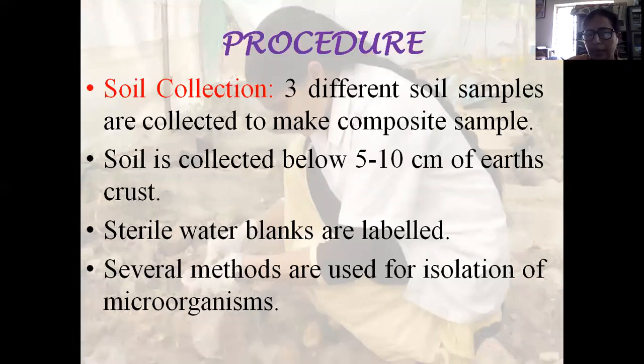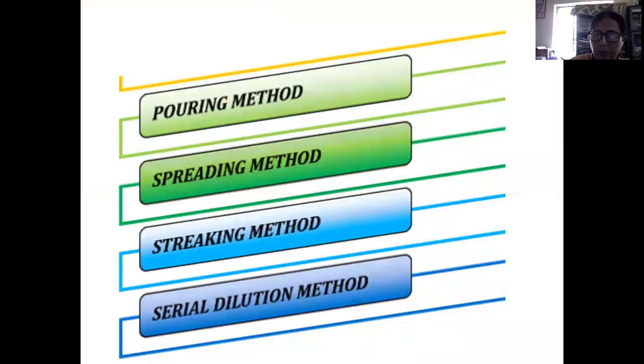Sterile water blanks are labelled and several methods are used for isolation of microorganisms: the pouring method, the spreading method, the streaking method and the serial dilution method. Today we will describe the serial dilution method.